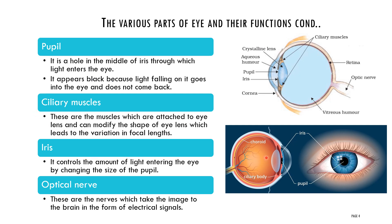The ciliary muscles are attached to the eye lens and can modify the shape of the lens. With the help of the ciliary muscles, the eye lens shape can be changed, which leads to variation of the focal length. Because of this variation in focal length, you can see the image may be enlarged or diminished. The focal length is the distance between the center of the lens and the principal focus.